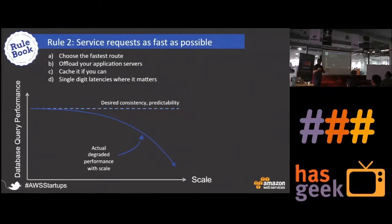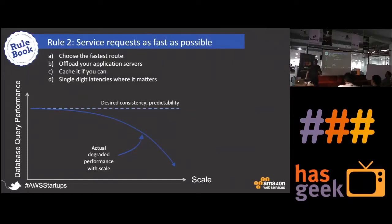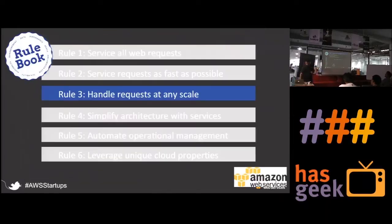Companies like Shazam leverage newer database skills for unique use cases. Shazam makes the app hear a song and identify it — none of the relational databases in the world would be able to handle that. They leverage newer NoSQL approaches for that.